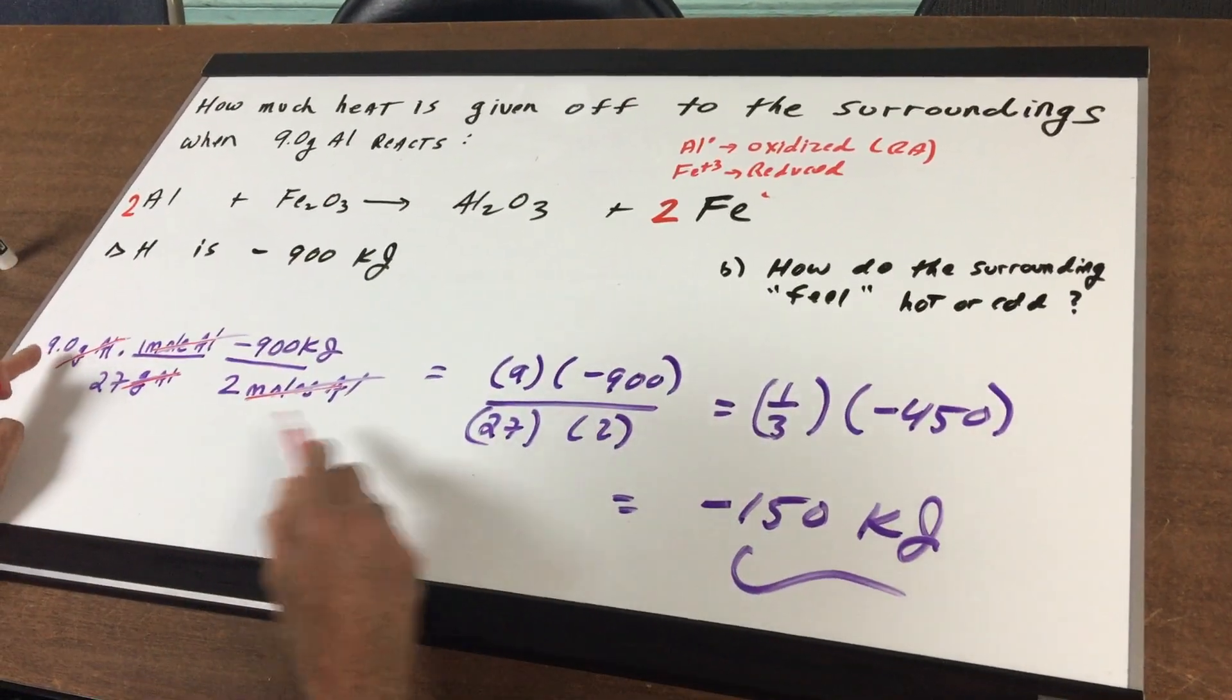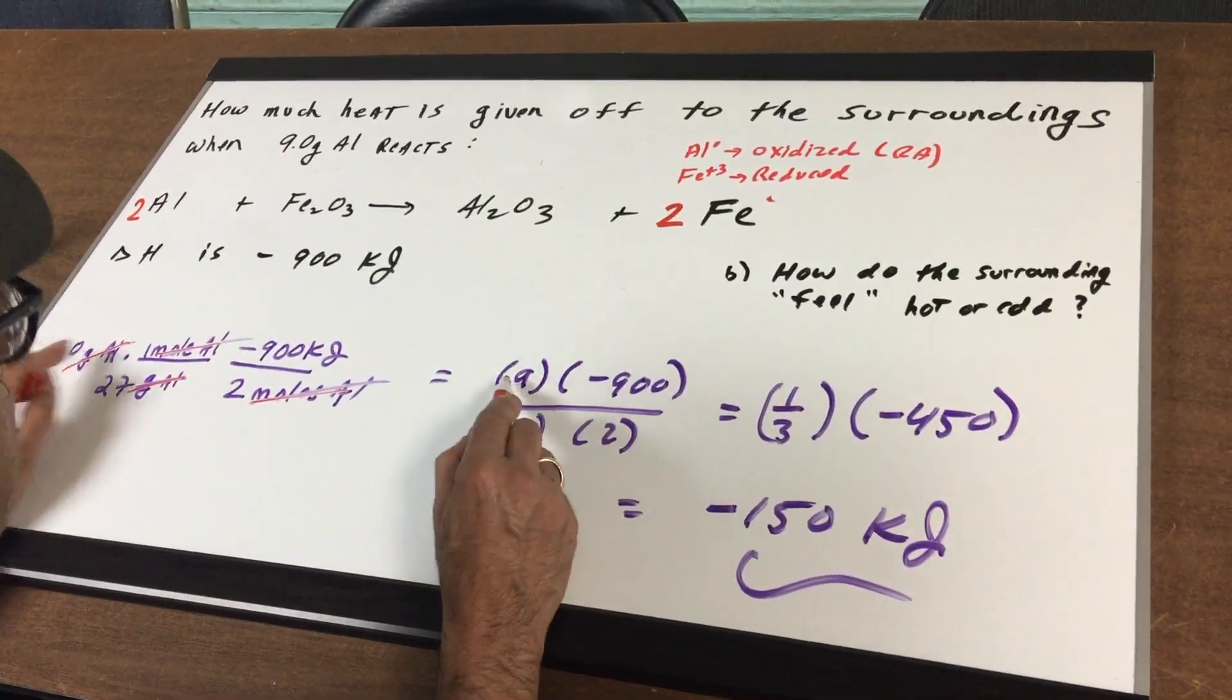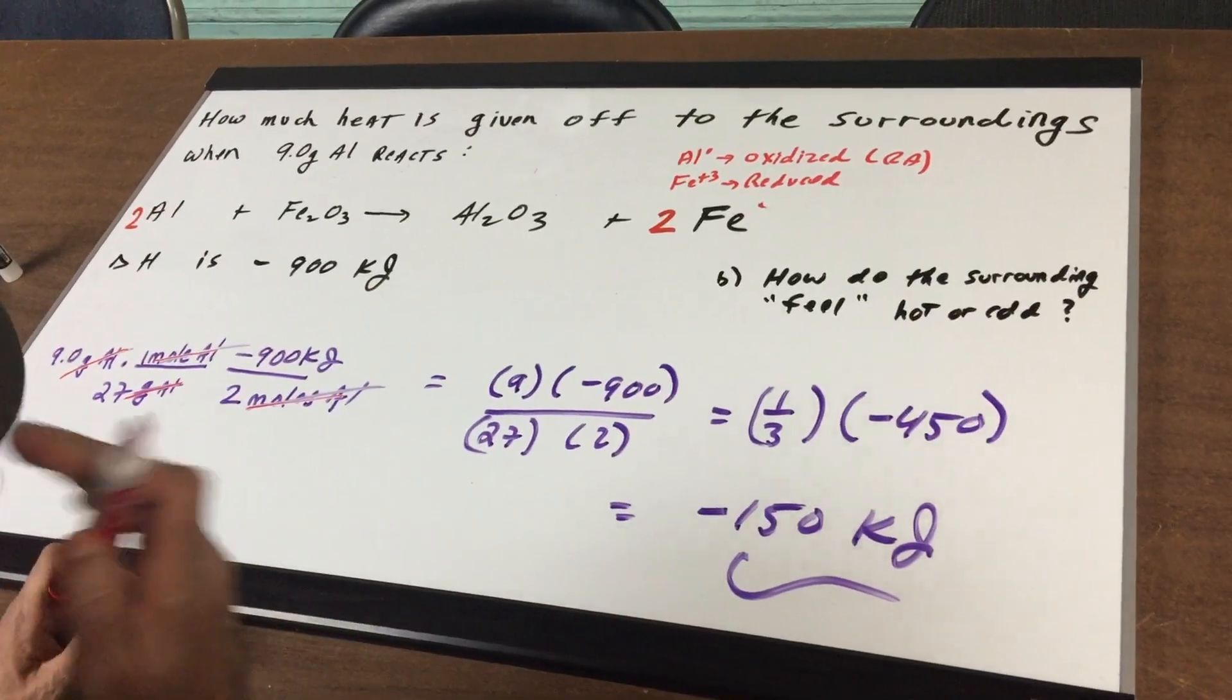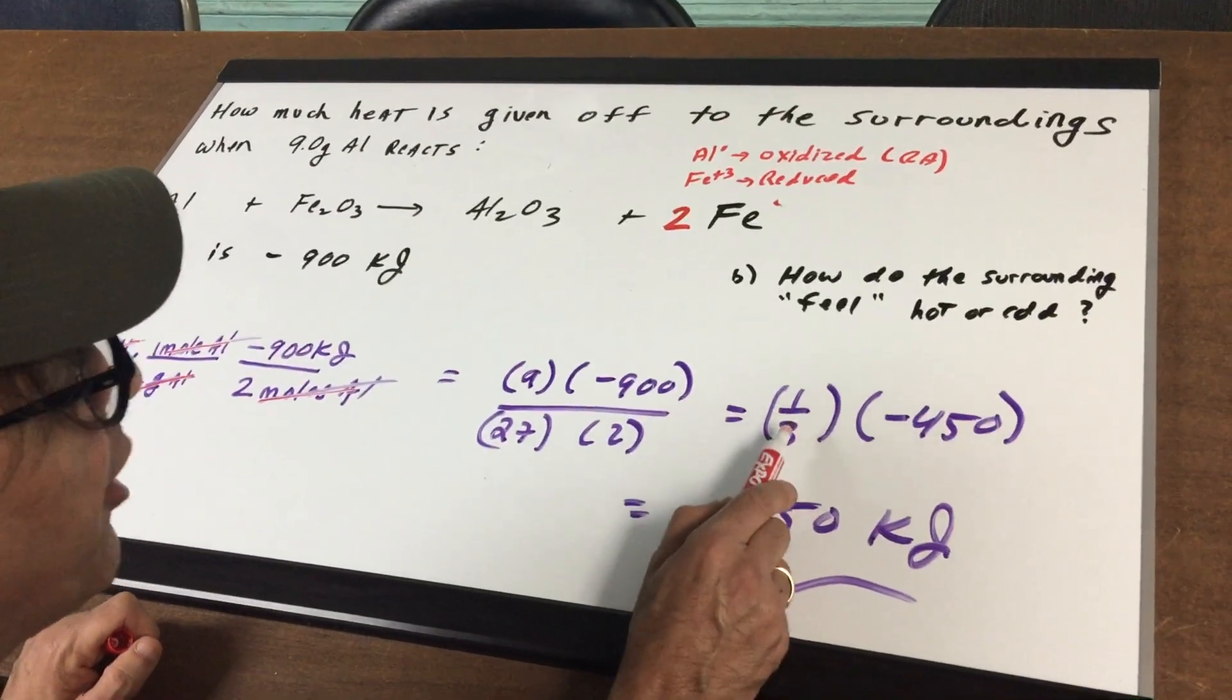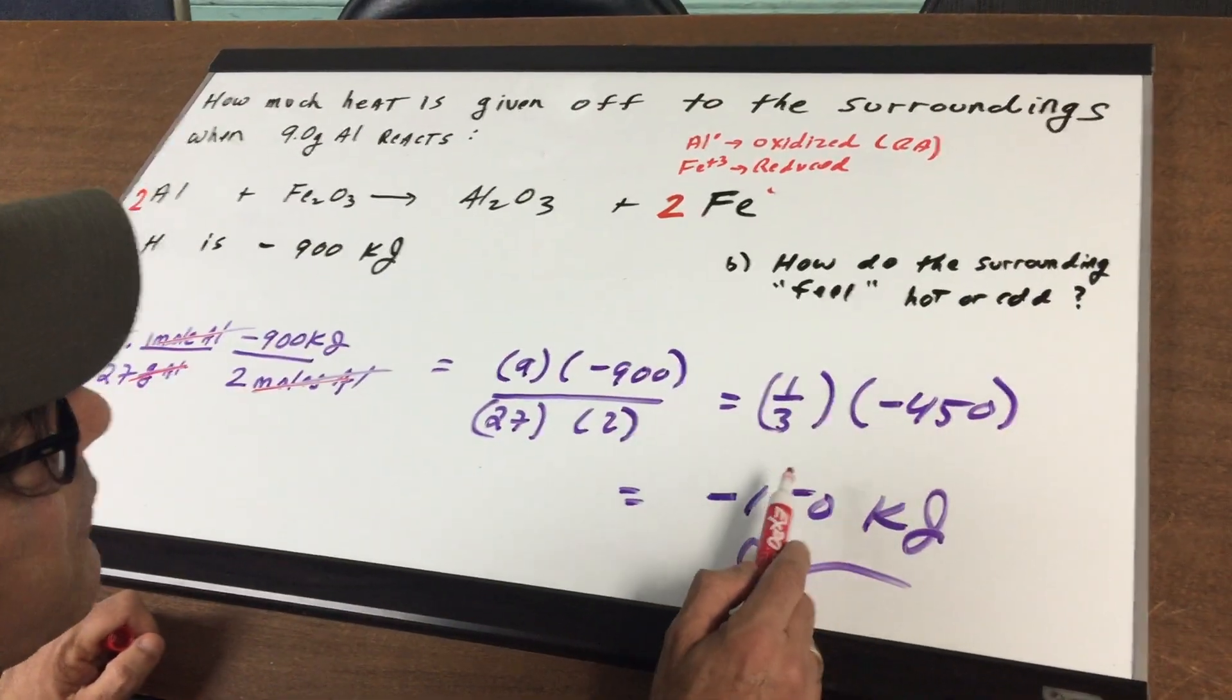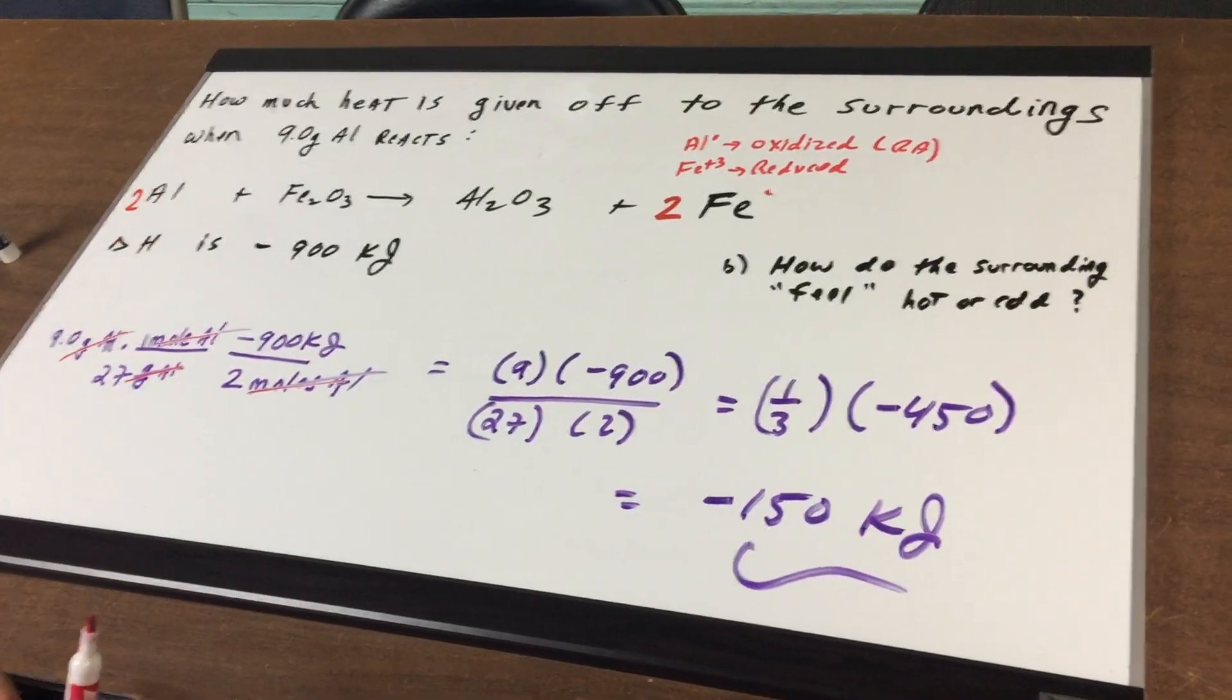Now, watch the trick. You're going to have nine times minus 900 divided by 27 and 2. Try to look for a quick escape. Nine over 27 is one third, minus 900 over 2 is 450. So, it becomes one third of negative 450 is minus 150 kilojoules.